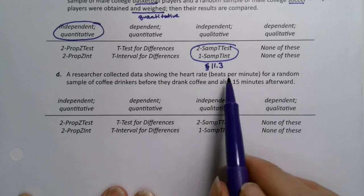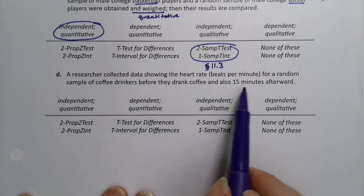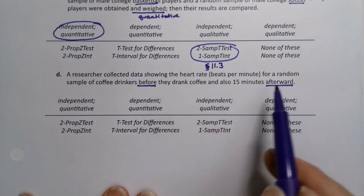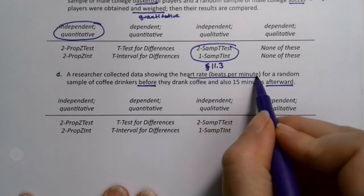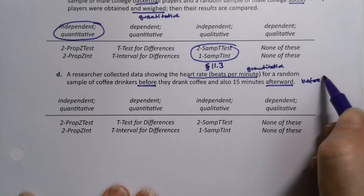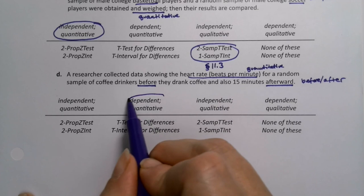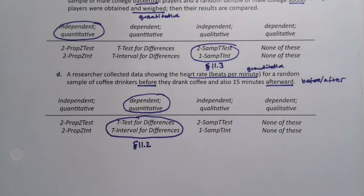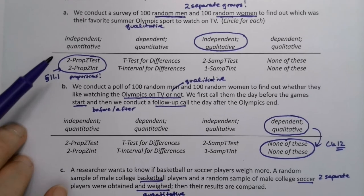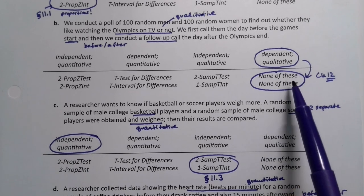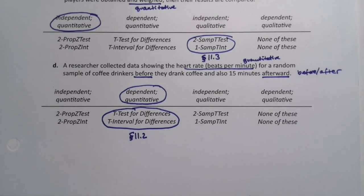Example 4: A researcher collected data showing heart rates in beats per minute for a random sample of coffee drinkers before they drink coffee and also 15 minutes after. The words 'before and after' are right there — that's dependent. What are we measuring? Beats per minute — that's quantitative. Before and after is classic matched pairs, so it's dependent and quantitative, which is section 11.2, where we deal with dependent samples for means.